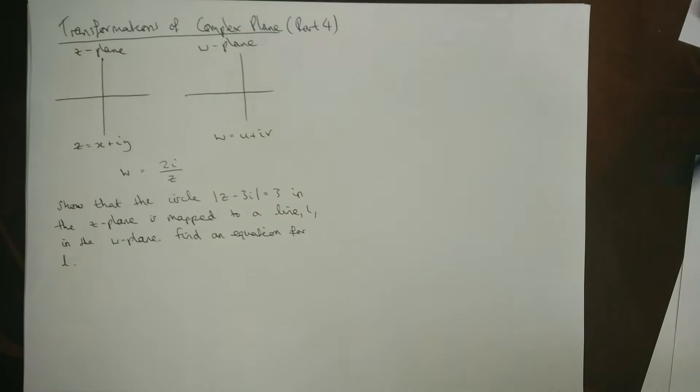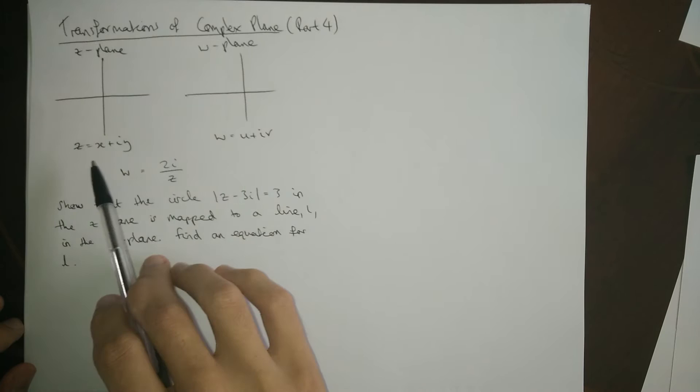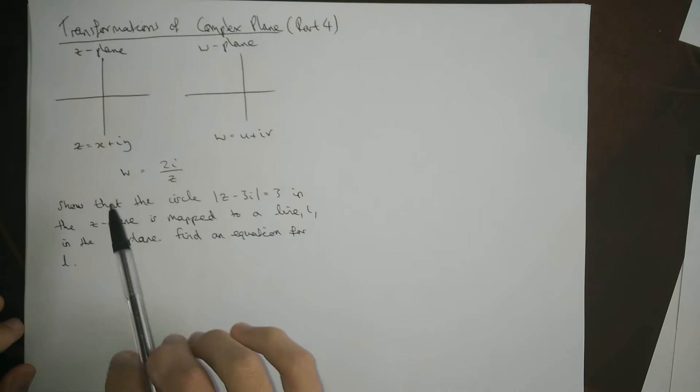Okay, so this is Transformations of the Complex Plane, part 4. So, very familiar starting position, we've got the Z plane and the W plane and there are other representations in terms of X and Y and U and V.